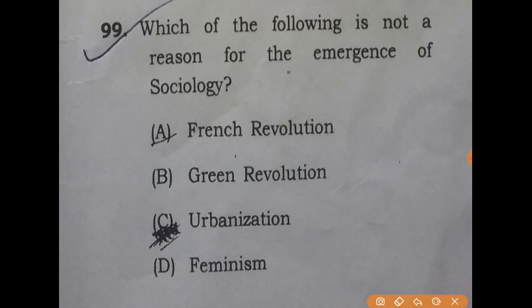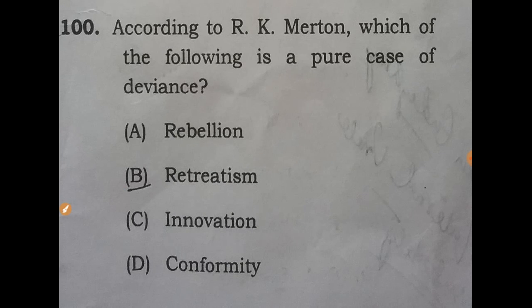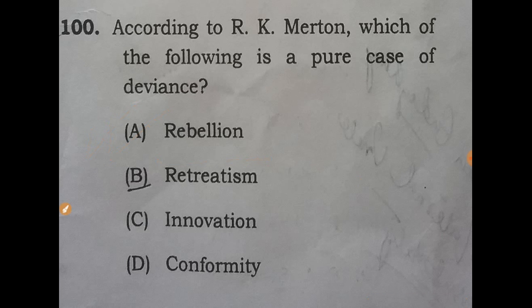Question 99: which of the following is not a reason for the emergence of sociology? The answer is B: green revolution. Question 100, the last question: according to R.K. Merton, which of the following is a pure case of deviance? The answer is A: rebellion. That's all guys — end of sociology Part 3. If there is any mistake, please comment down below, and thank you, have a good day.